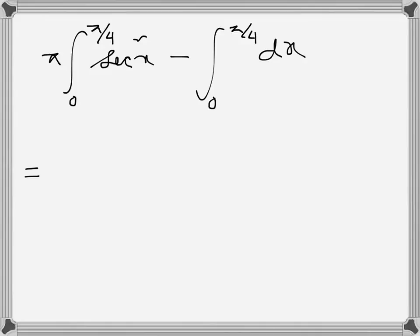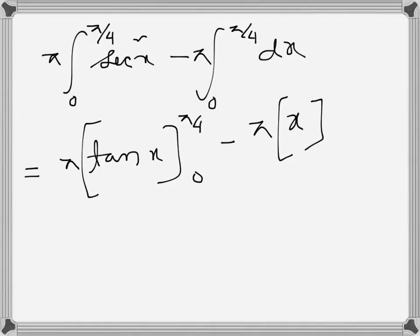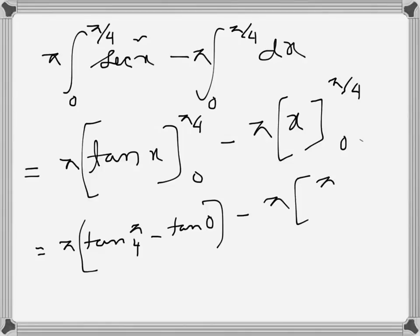The integration of sec²x is tan x, so π times tan x evaluated from 0 to π/4. And then this one will be just x evaluated from 0 to π/4. This is tan(π/4) minus tan(0), and this one will be π/4 minus 0.